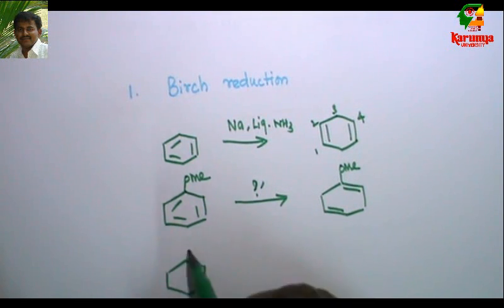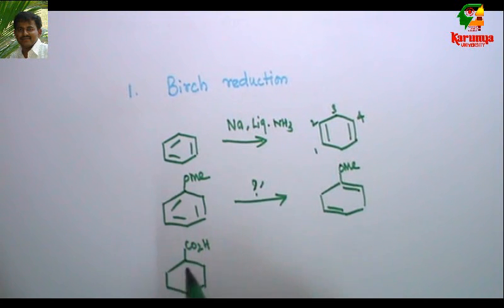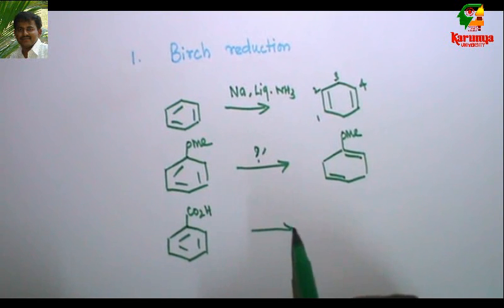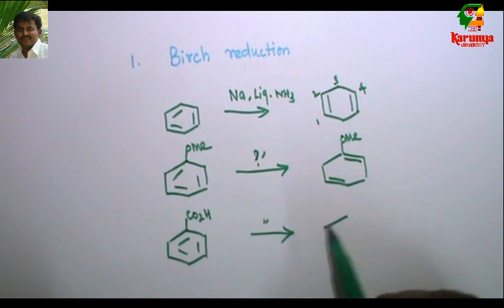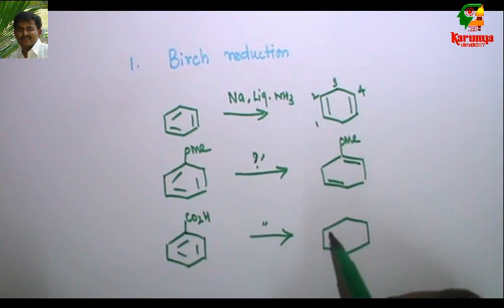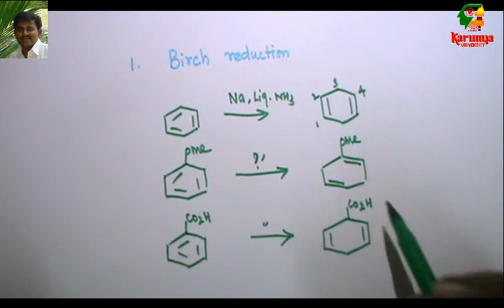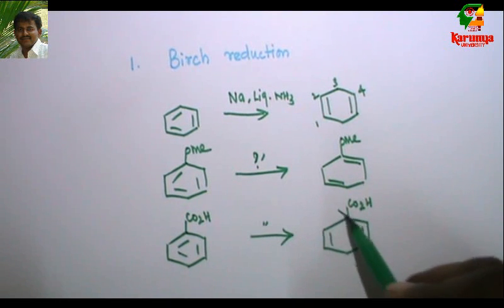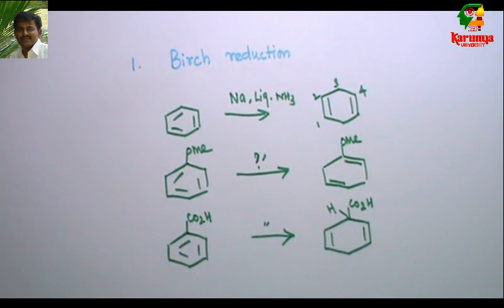If you go for an electron-withdrawing group — like carboxylic acid — then you get a product where hydrogen is added to the carbon which bears the electron-withdrawing group.